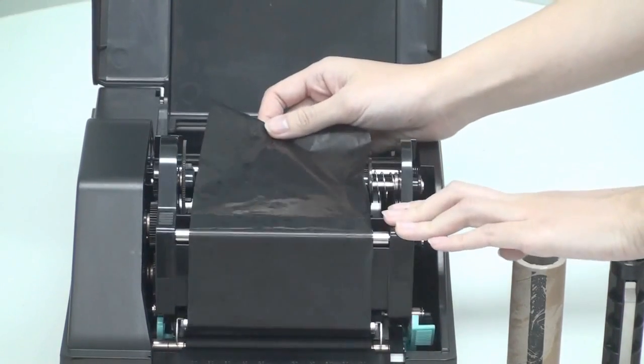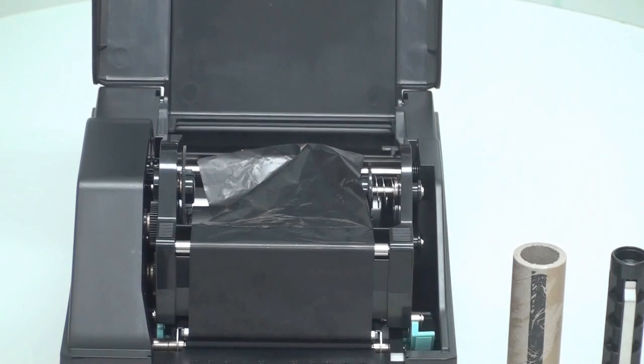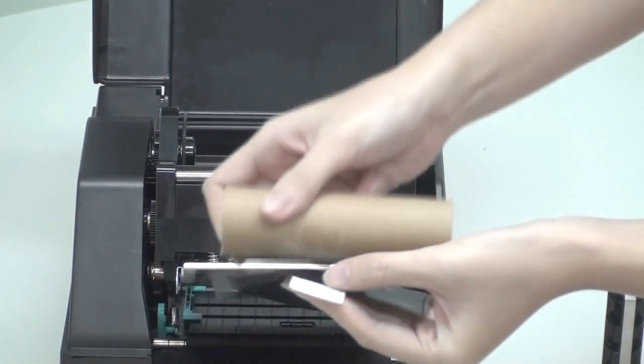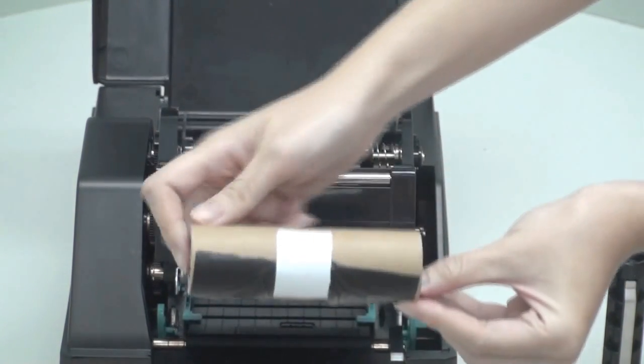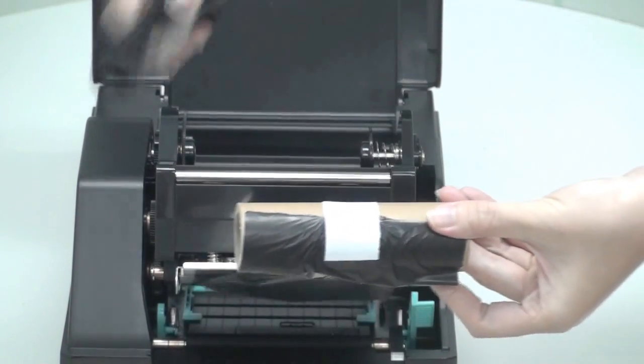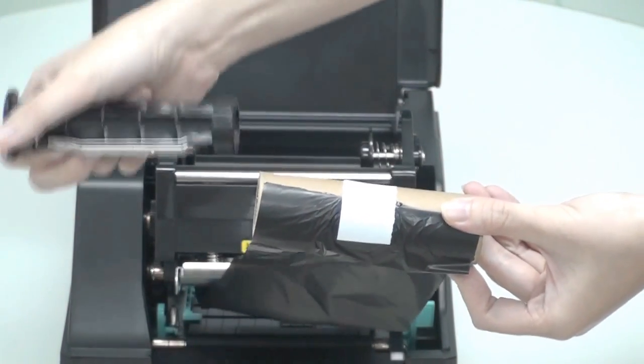Lower the printhead module. At this point, we're ready to attach the end of the ribbon onto an empty ribbon core in the ribbon take-up area, so used ribbon can accumulate there. To do this, secure the end of the ribbon to the core with a piece of label or tape, and then insert the spindle into the core.